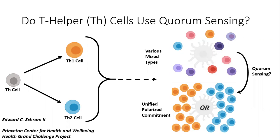For example, T helper cells differentiate into Th1 cells to fight viral infections, and they differentiate into Th2 cells to fight worm infections.